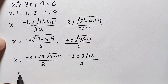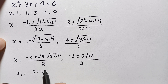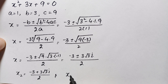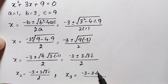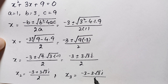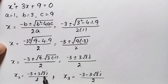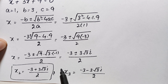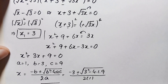We have two complex solutions: x₂ = (−3 + 3√3 i) / 2 and x₃ = (−3 − 3√3 i) / 2. So there are three total solutions: one real solution x₁ = 3, and two complex solutions x₂ and x₃.